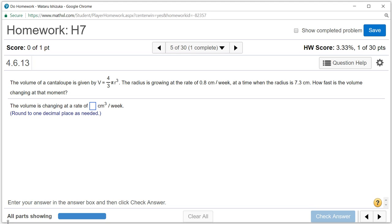Let's look at homework 7, problem number 5. It says that the volume of the cantaloupe is given by v equals 4/3 pi r cubed. So we're assuming that the cantaloupe is a sphere.